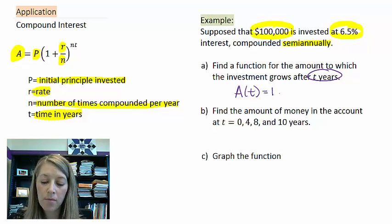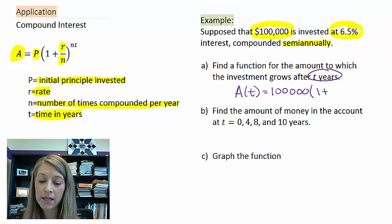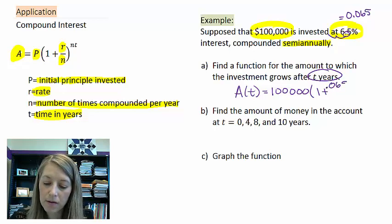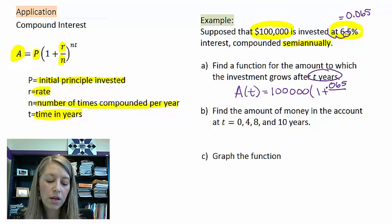We know the initial amount invested is $100,000, one plus. We know our rate is 6.5%. You should never be plugging in percents. You should always be plugging in decimals. So I convert this to a decimal by moving my decimal place over two. So that's the same thing as 0.065 over n, the number of times it's compounded per year.